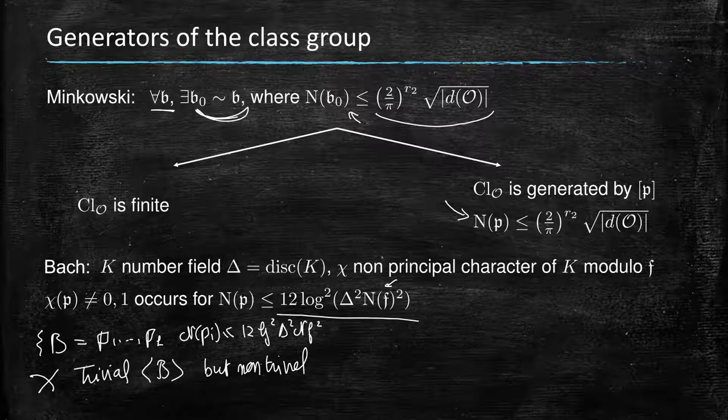And so it's a non-trivial character that would be trivial on the set, I mean, on all ideals that can be generated by the primes of norm less than 12 log squared delta. But that would violate this statement from Bach...